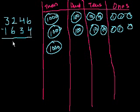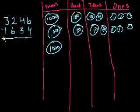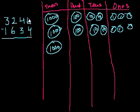And we're going to subtract 1,634 from it. Whenever we do subtraction, we have to make sure the number below is smaller than the number above, so we can just do subtraction in each of the places. You can go right to left or left to right. 1,000 is less than 3,000, so that's fine. But 600 is not less than 200, so that's not cool. 30 is less than 40, and 4 is less than 6. So somehow we have to get a larger number up here in the hundreds place.